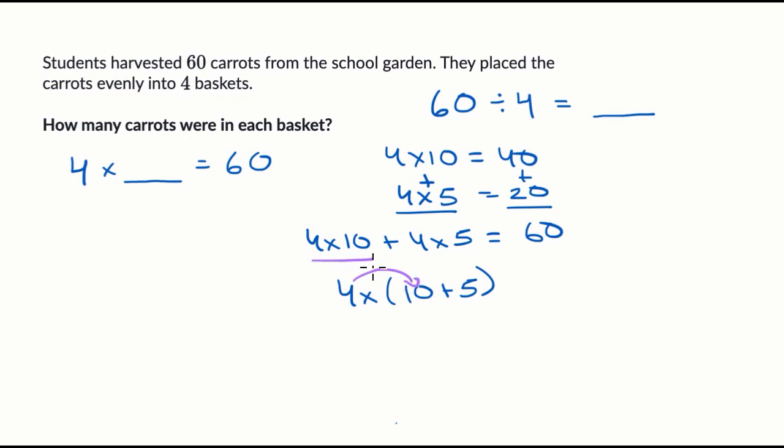If we said 4 times 10, well, that's that part there. And then we have 4 times 5, that is that part there. 4 times 10 plus 4 times 5. So 4 times 10 plus 5 is also equal to 60.